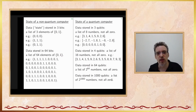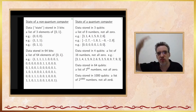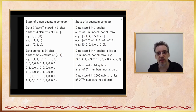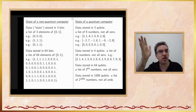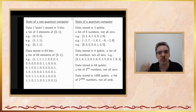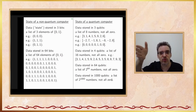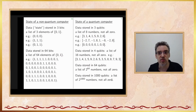This idea of a quantum computer having a huge number of parallel operations might make it sound like a super-fast parallel computer — which it is. The problem is that we don't have easy ways to get data out of it. You can't just ask which of the 2-to-the-1000 computations has the answer and have it tell you. The only way to extract data is through an operation called measurement.